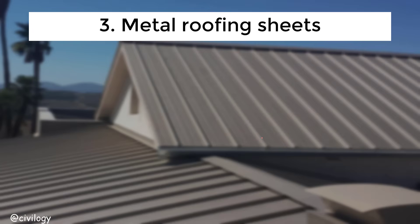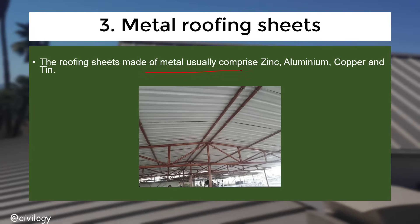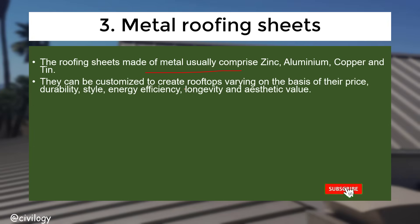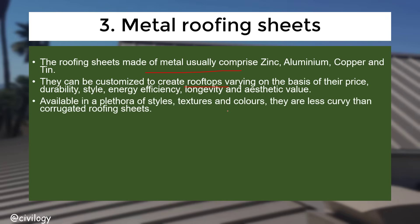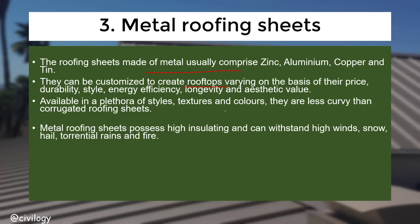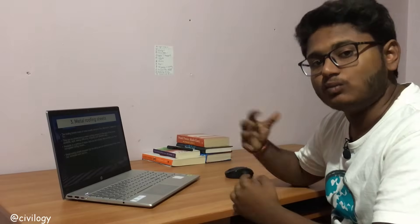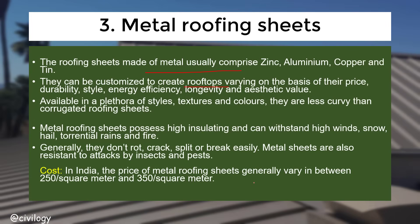Metal roofing sheets are usually made of zinc, aluminum, copper, and tin. They are customized to create rooftops varying in price, durability, style, energy efficiency, longevity, and aesthetic value. They are available in a plethora of styles, textures, and colors. Metal roofing sheets possess high insulation and can withstand high winds, snow, hail, torrential rains, and fire.